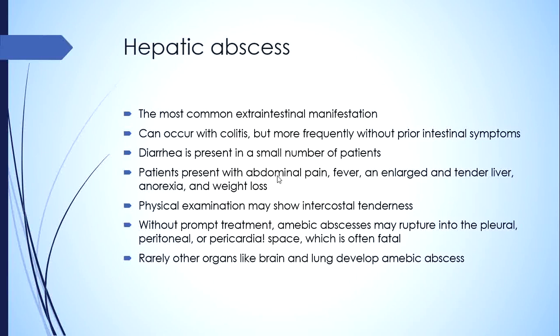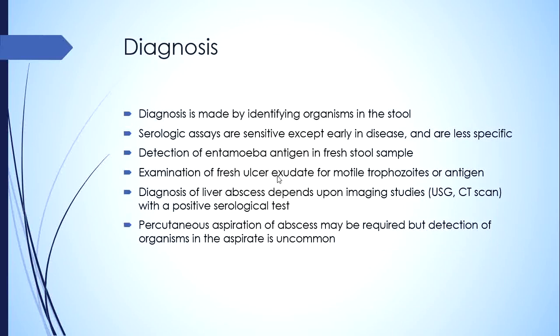The patient usually presents with abdominal pain, fever, and an enlarged and tender liver, anorexia, and weight loss. Physical examination will show right hypochondrial tenderness and sometimes intercostal tenderness. Without prompt treatment, amoebic abscess may rupture into the pleural, peritoneal, or pericardial space — the last condition is often fatal. Sometimes patients present dramatically with a hepatobronchial fistula, developing sudden cough with expectoration of copious amounts of brownish content from the abscess. Rarely, abscesses can occur in other organs like the brain and lung.